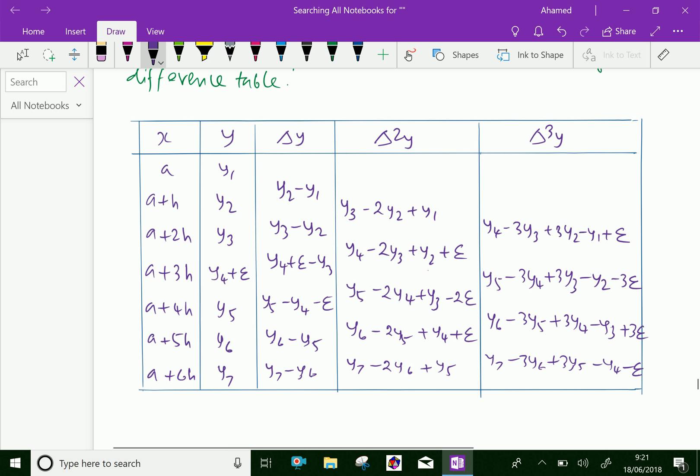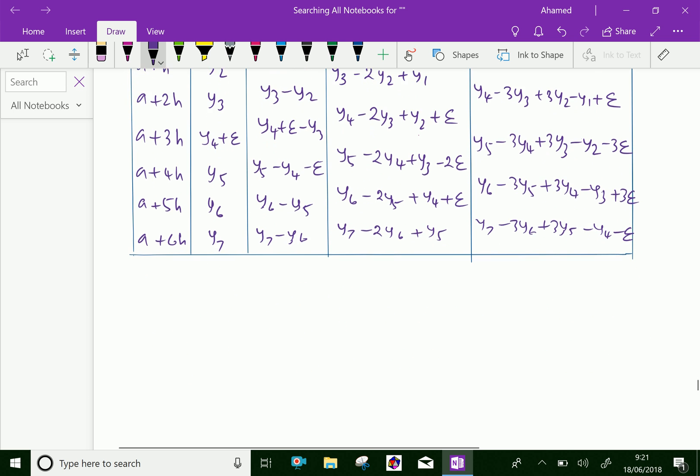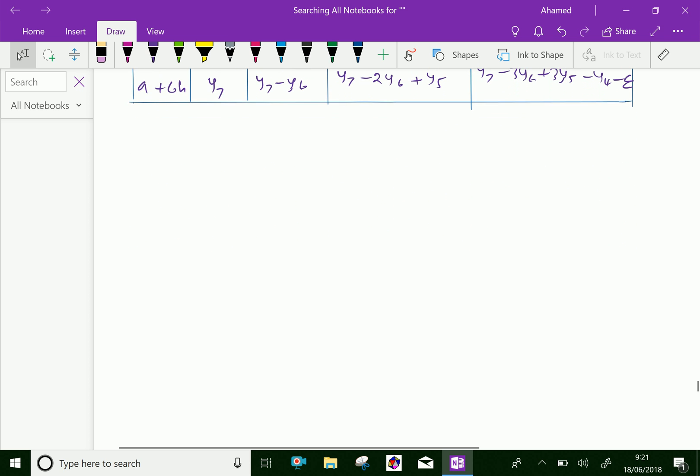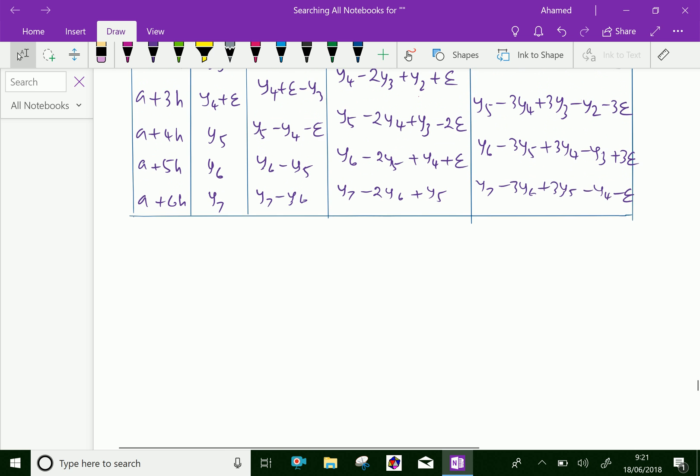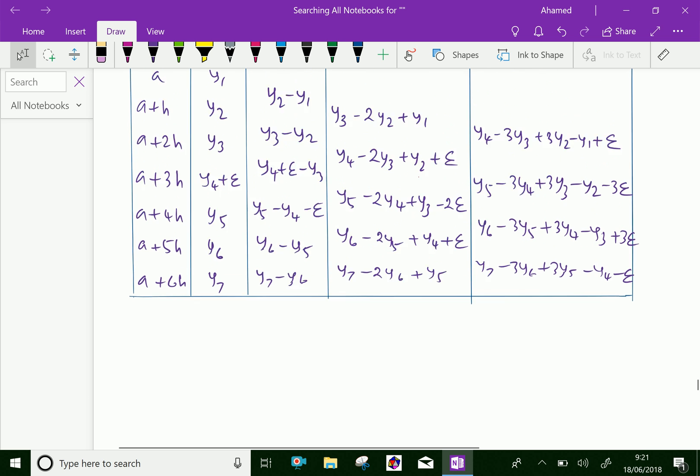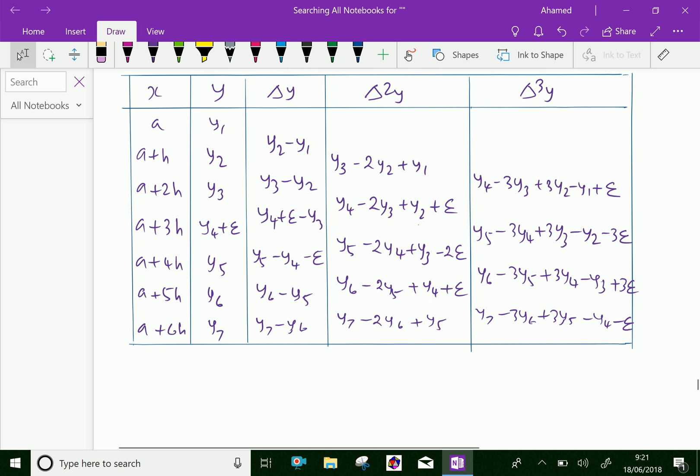Look at this table. From the table we can arrive at some assumptions. The effect of error increases with the order of the differences. The coefficient of e in the differences affected by the error are binomial coefficients with alternating signs.